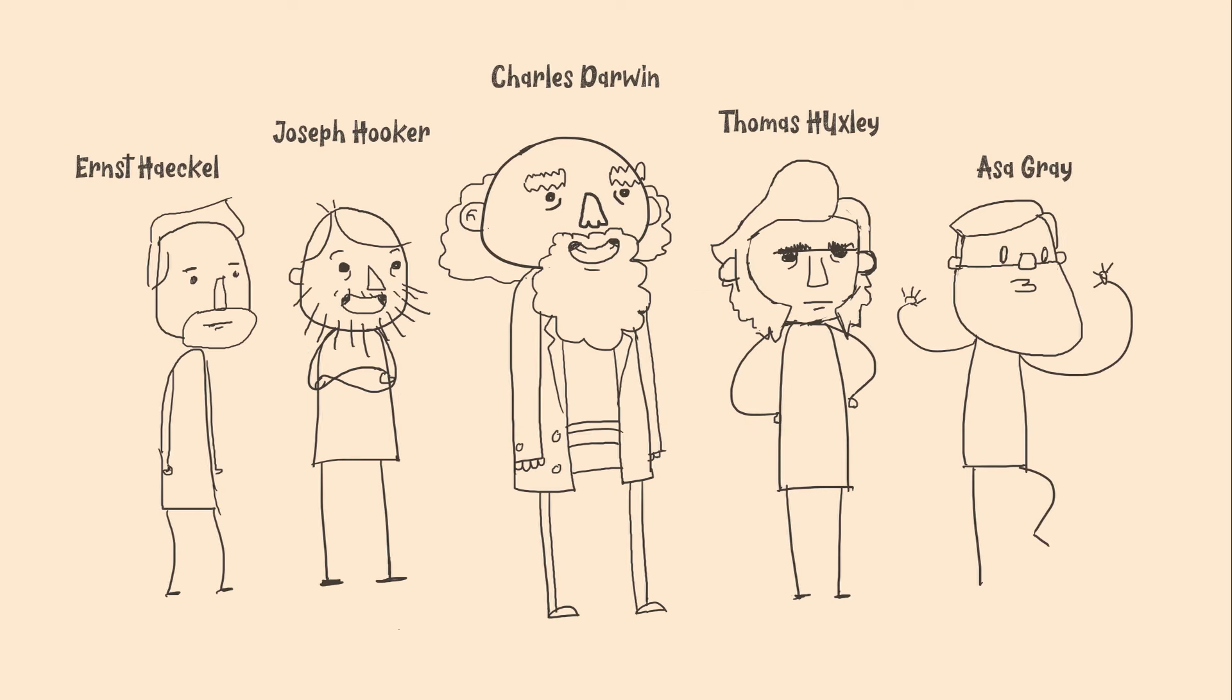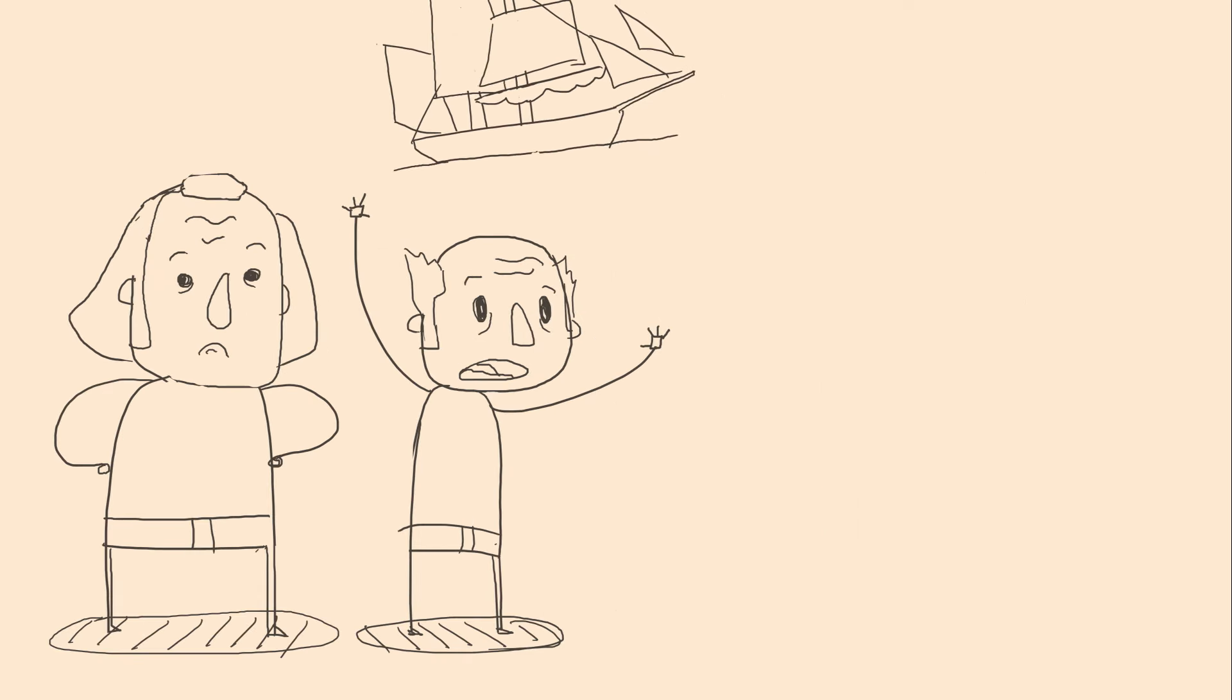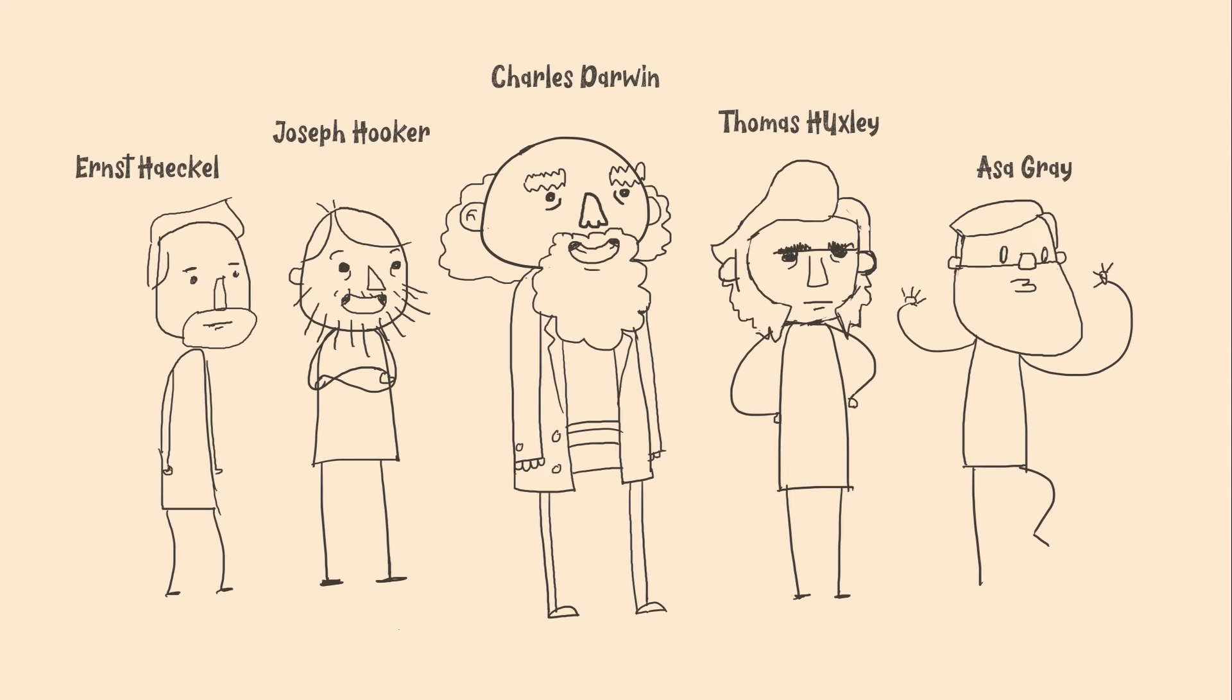So tons of younger naturalists, we're talking Joseph Hooker, Thomas Huxley, Ernst Haeckel, Asa Gray, they were convinced. Old coots like Agassi just missed the boat. See you later suckers. These Victorian naturalists didn't yet have the data or tools to explore the question much further, so they just held out hope that the fossils would turn up eventually and focus their efforts elsewhere.